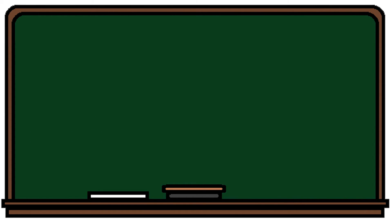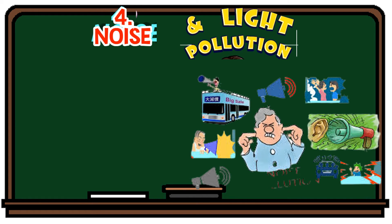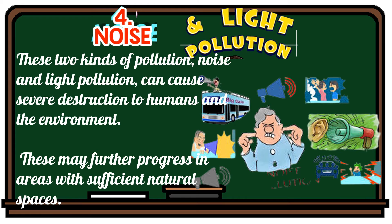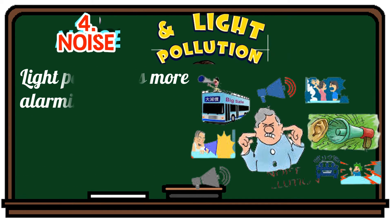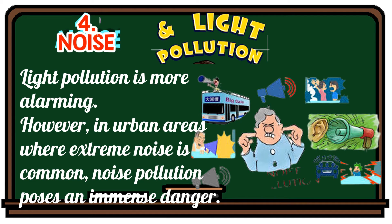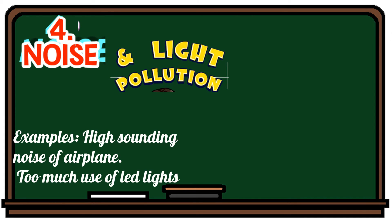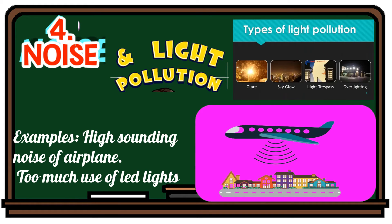The fourth type of pollution is noise and light pollution. These two kinds of pollution can cause severe destruction to humans and the environment. Light pollution is more alarming, however in urban areas where extreme noise is common, noise pollution poses an immense danger. Examples include high sounding noise of airplanes and too much use of LED lights. The types of light pollution are glare, sky glow, light trespass, and over-lighting.